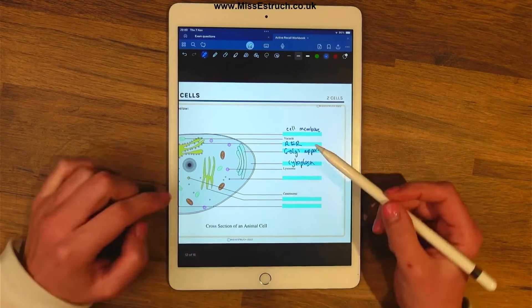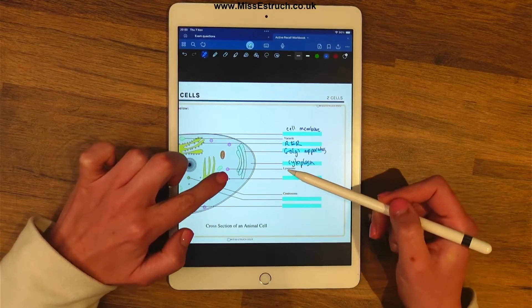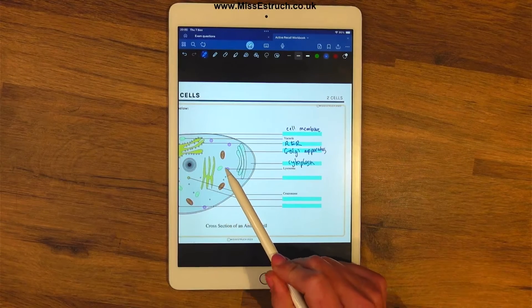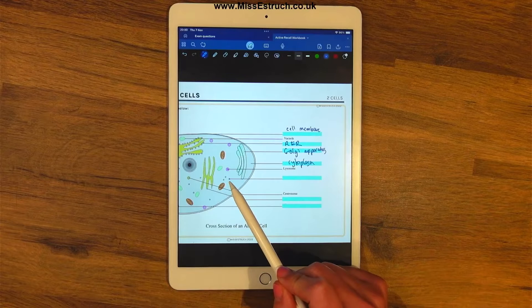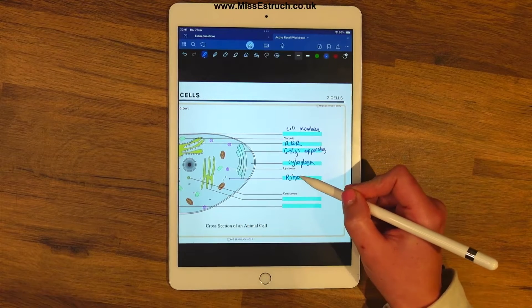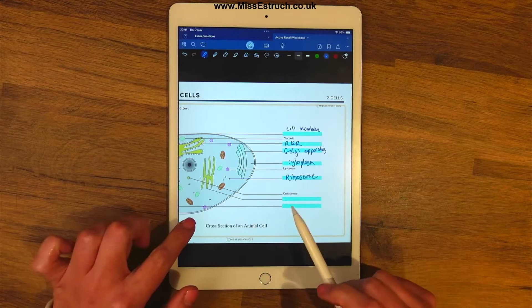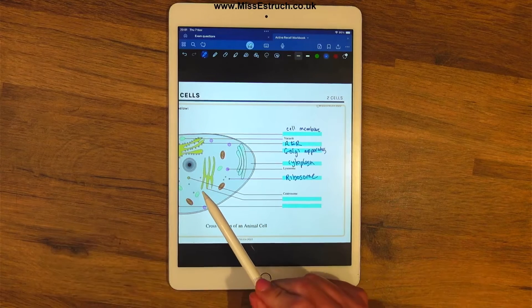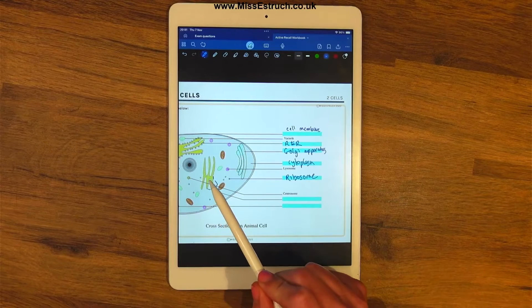And then we've got these little circles over here. Now the reason that one's been left unlabeled, because sometimes it's hard to tell the difference between the lysosome and these smaller circles. But lysosomes are actually bigger than this organelle here. This is the smallest one that you learn and that is the ribosome.